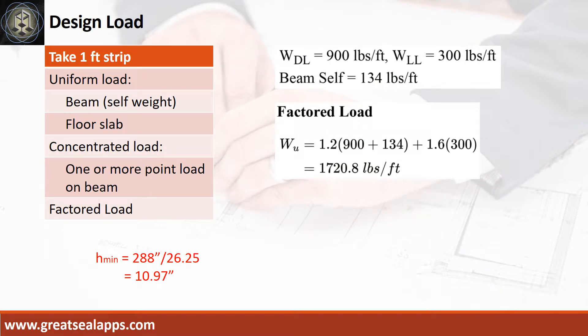The beam carries a uniform dead load of 900 pounds per foot and uniform live load of 300 pounds per foot. The beam's self-weight is 134 pounds per foot for a total factored load of 1,720.8 pounds per foot.